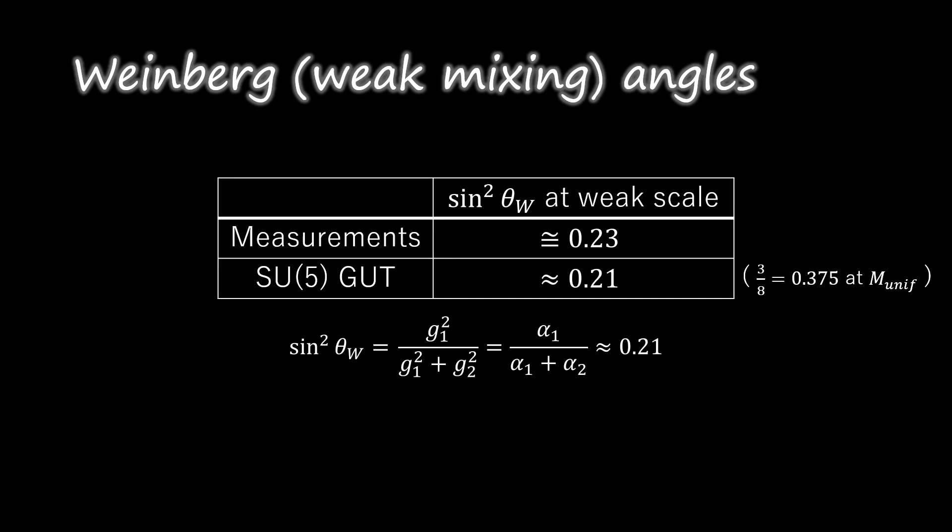If SU2 and U1 are subgroups of a larger group, then the ratio of the couplings G1 and G2 is determined. That means that the weak mixing angle θw is no longer a free parameter to be fixed by experiment.